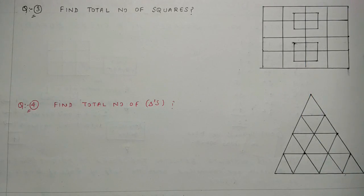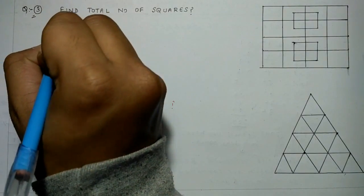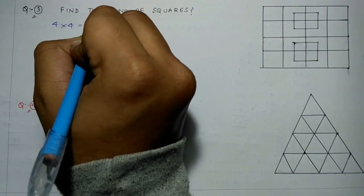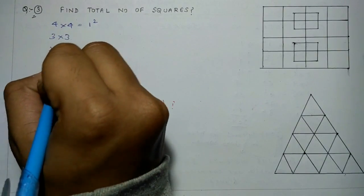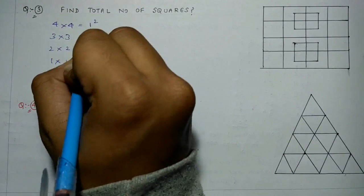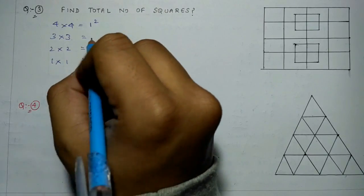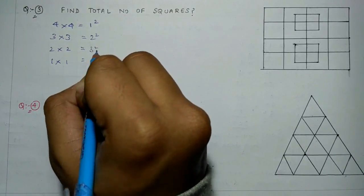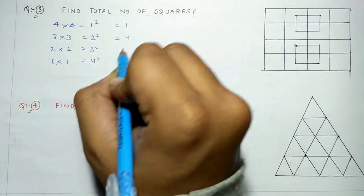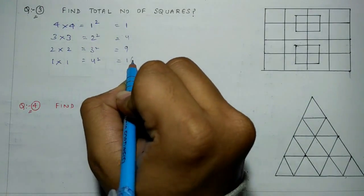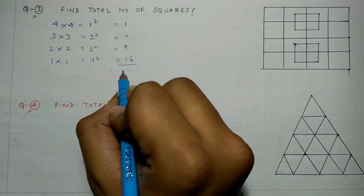Third question: find the total number of squares in this figure. Yeh phir se chessboard type pattern hai. Biggest order 4x4 ka hai. Toh ek baar 4x4 likhenge — 1 square. Phir order kam karenge: 3x3 — 2 square, 2x2 — 3 square, 1x1 — 4 square. 1 square is 1, 2 square is 4, 3 square is 9, and 4 square is 16. Jinka sum ho jayega 30.